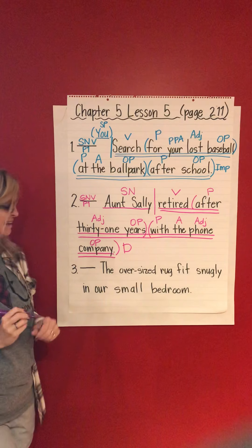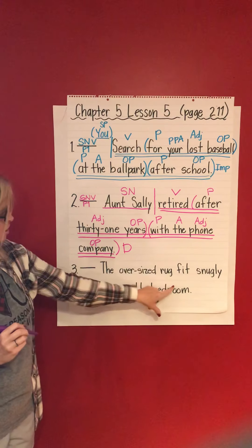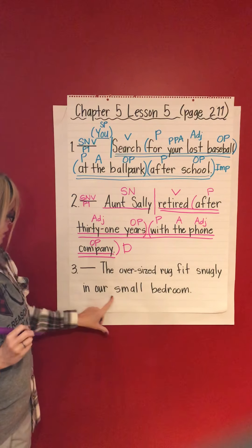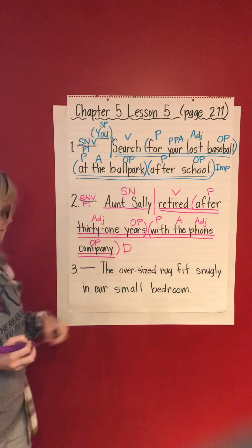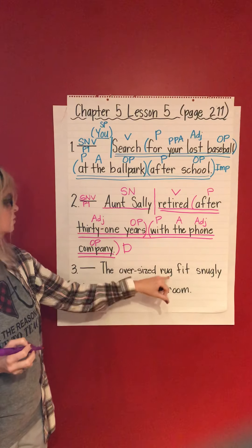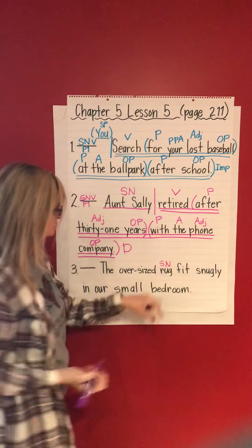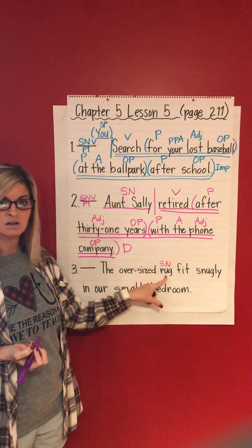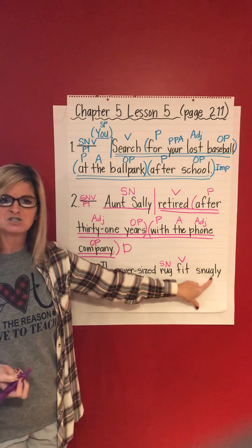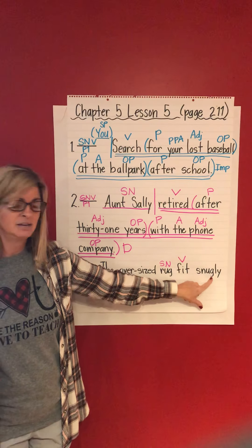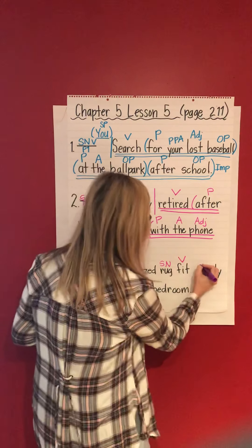Very good. Okay, number three. Ready, set, read: the oversized rug fits snugly in our small bedroom. What fit snugly in our small bedroom? If you said 'rug,' that is correct — rug is our subject noun. What is being said about rug? Rug fits — verb. 'Snugly' — what question does this answer? It answers the question 'how' — fit how? Snugly — and that would be an adverb, because adverbs answer how, when, and where.